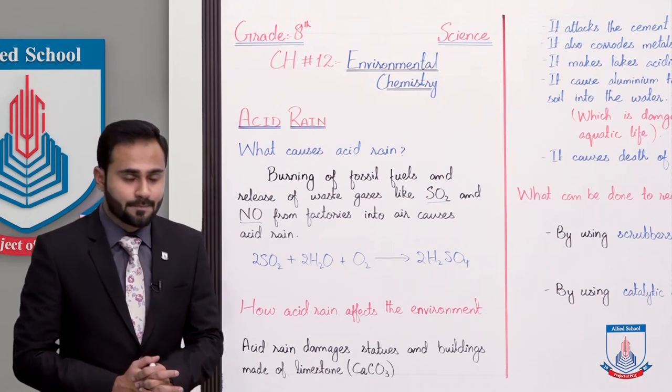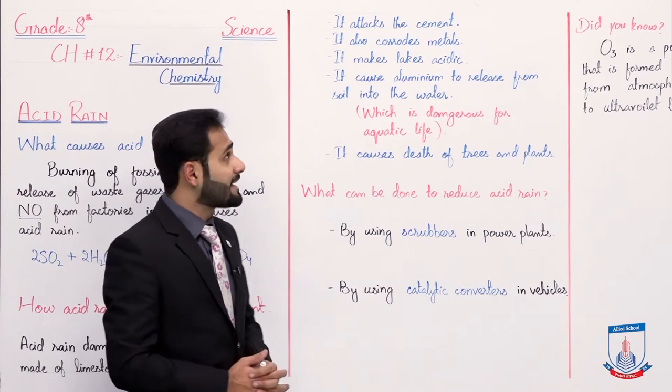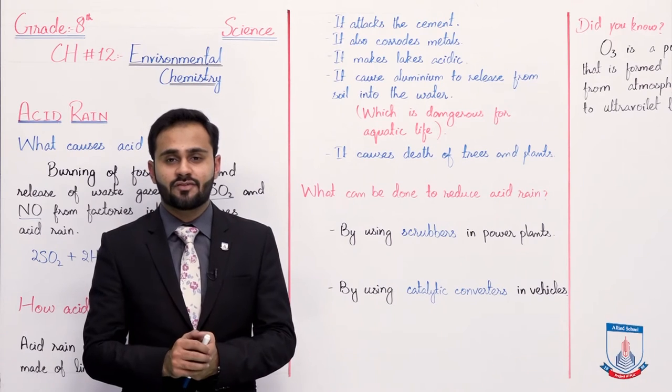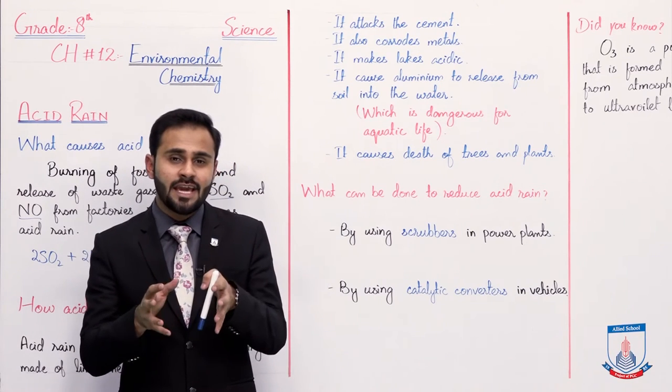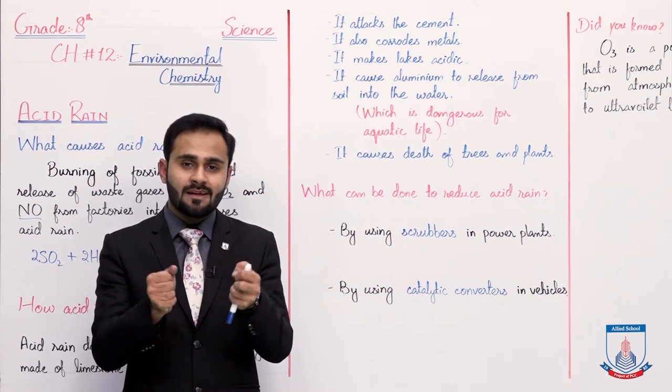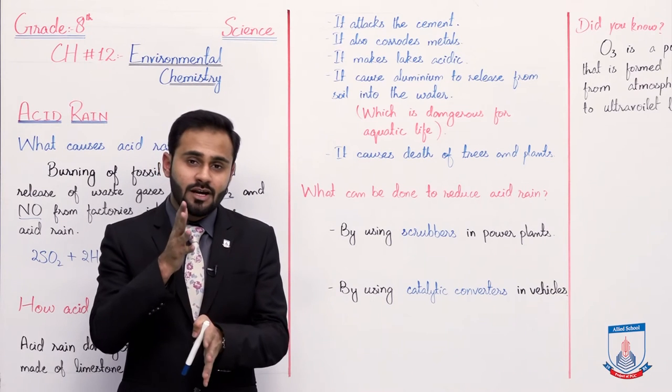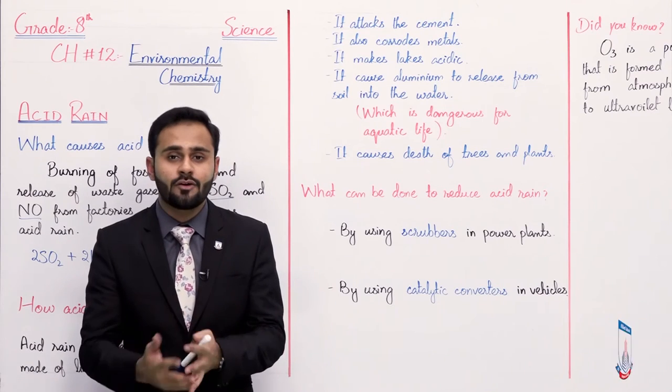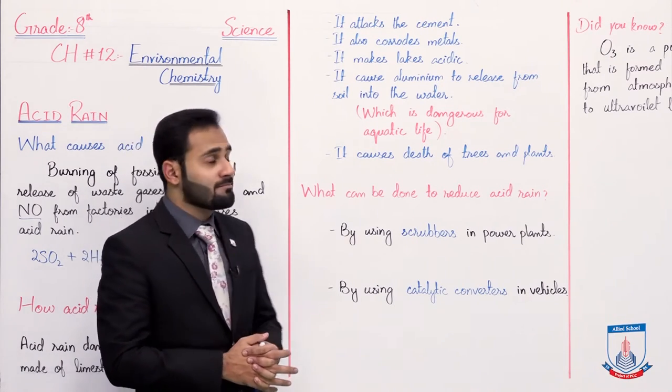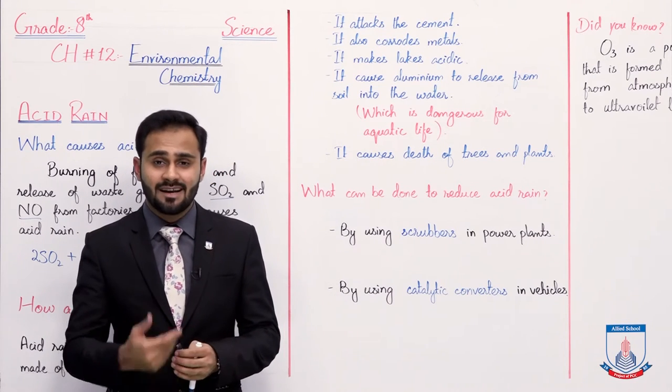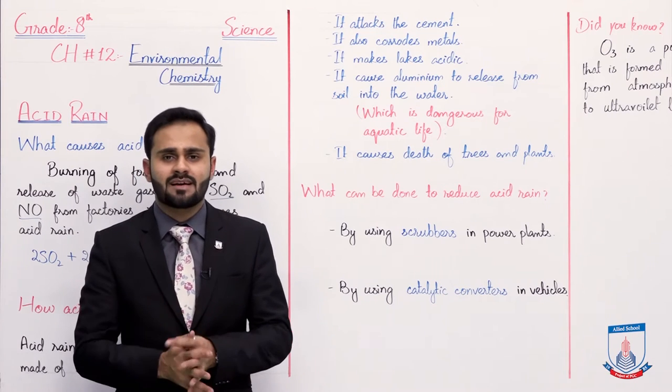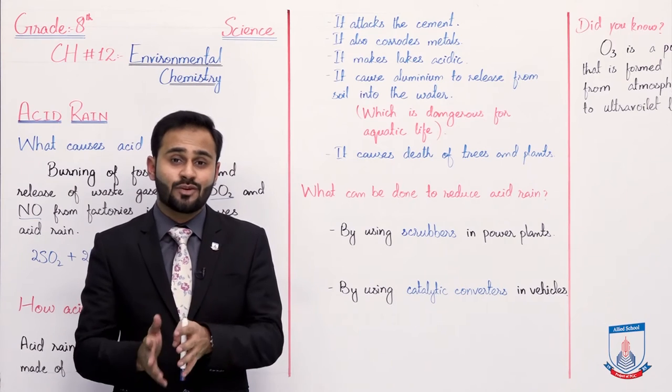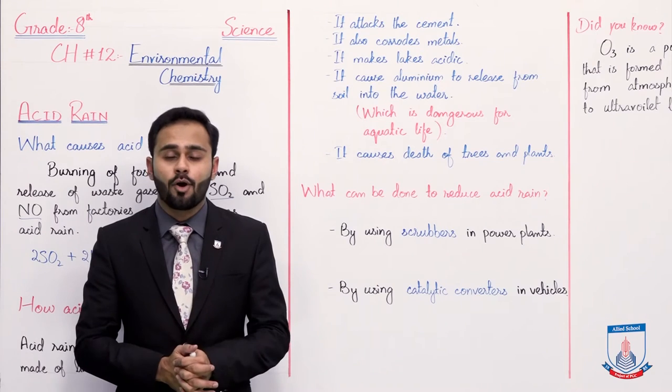It attacks the cement. The cement has strong bonding. When the cement gets damaged, the bonding that was there also gradually becomes weak, and in this way your structure also becomes weak. Clear? And it also corrodes metals. So it damages metals, it causes rust on metals. When acid rain falls on that metal, that metal will rust and get damaged. So any structure that is made of metal will also get badly damaged due to acid rain.